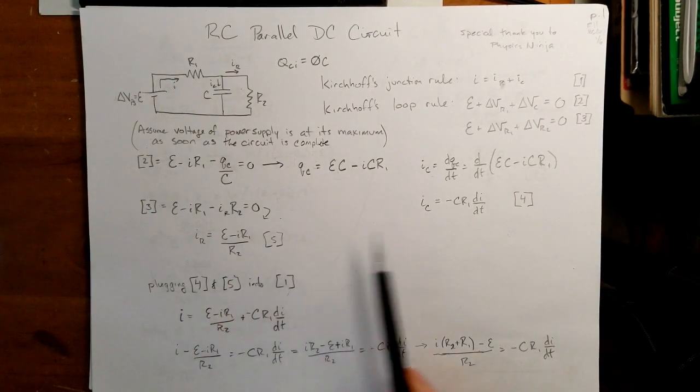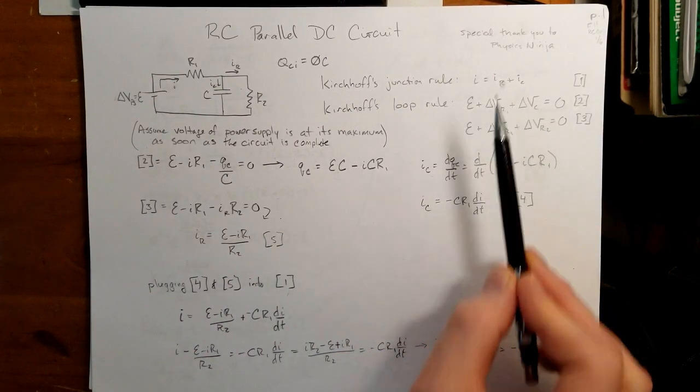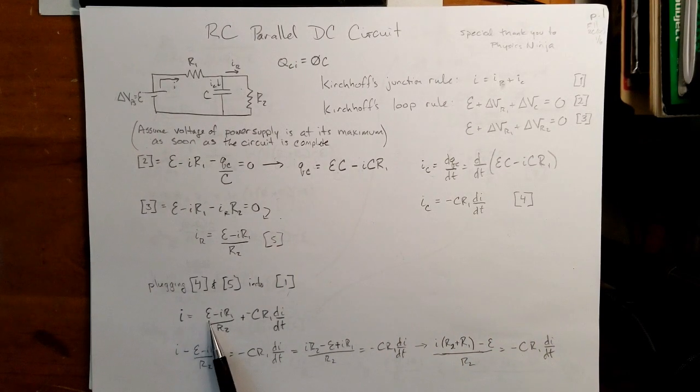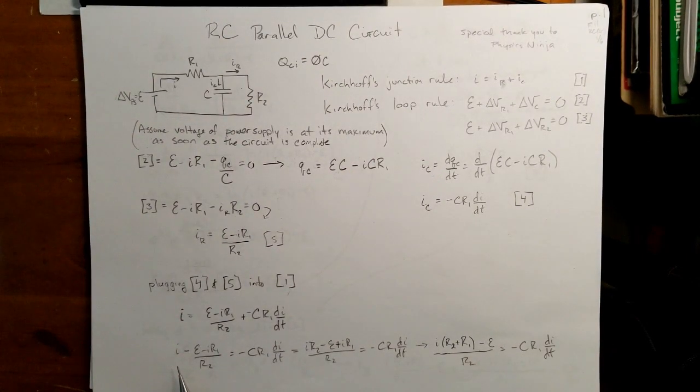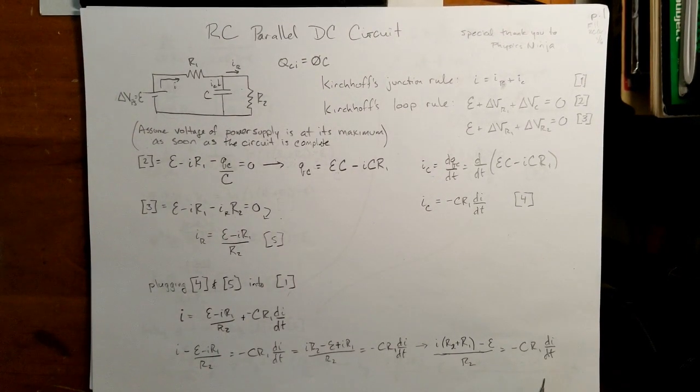And now we can take my equations 4 and 5 and plug that into equation 1, and I have I is equal to epsilon minus IR1 over R2 plus negative CR1 di dt. So now I have an equation with just I in it, and so it's a matter of solving for I. And so I want to get all the I's on one side, and I've got the progression right here.